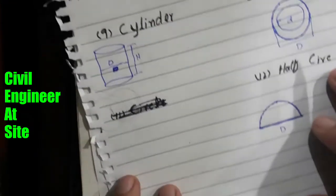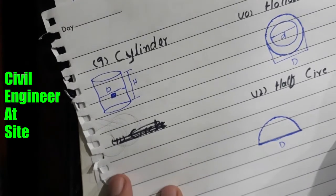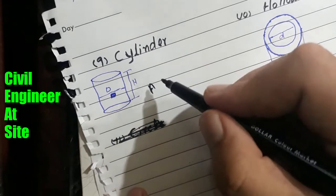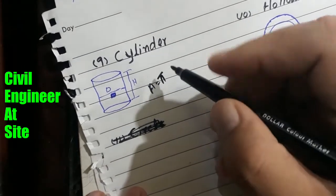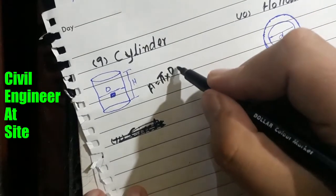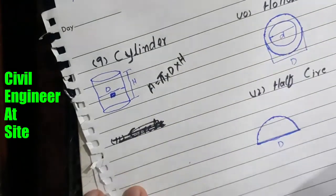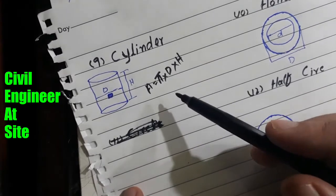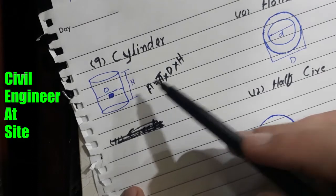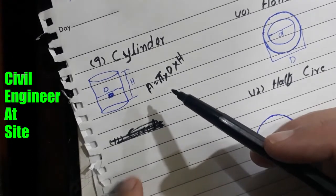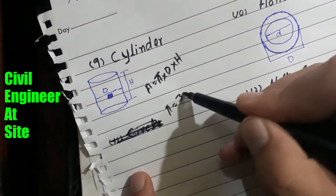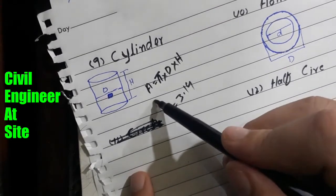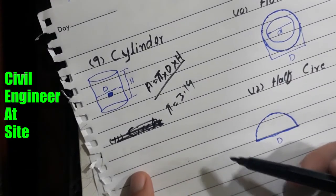Now we will find the area of a cylinder. The area formula for a cylinder is A = π × d × h, where pi is the constant, d is the diameter of the cylinder, and h is the height. When we put the value of diameter and height and multiply with pi (3.14), it will give the area of the cylinder.